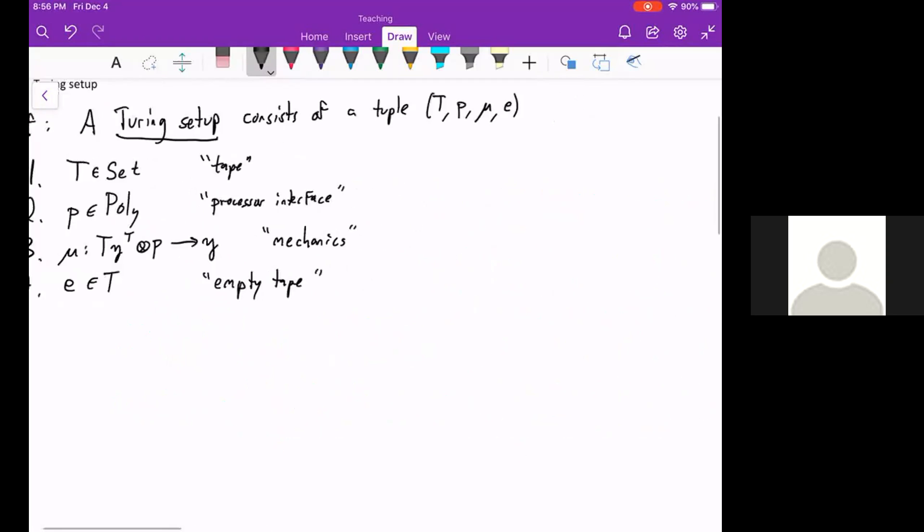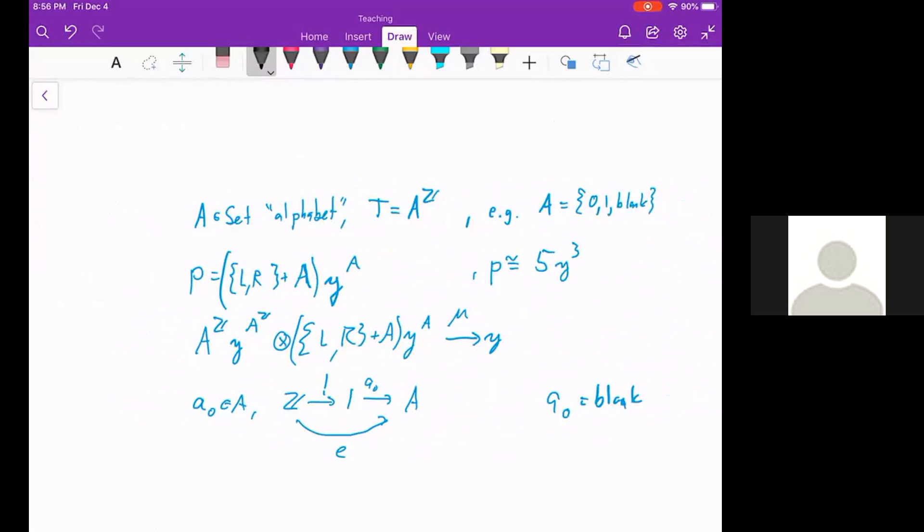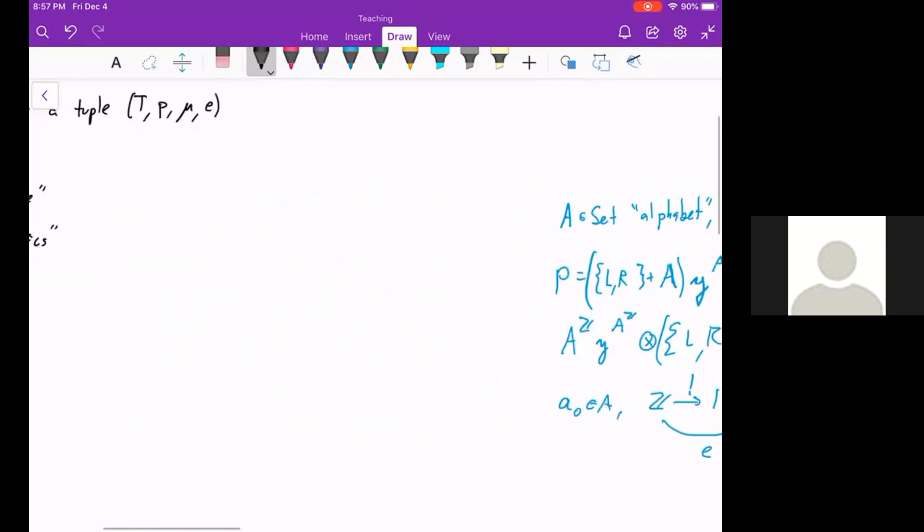So let's start at the top here. A is a set called the alphabet. And throughout this talk, I'll just think of it as zero one or blank. And we can think of T as A to the Z. Now again, T is completely abstract. It can be any set you want, but in Turing's original setup, T was functions from Z like positions on a tape to an alphabet zero one blank. Maybe it was assumed that you could take a countable subset of this because you could assume that the tape always had bounded support. It was always blank almost everywhere.